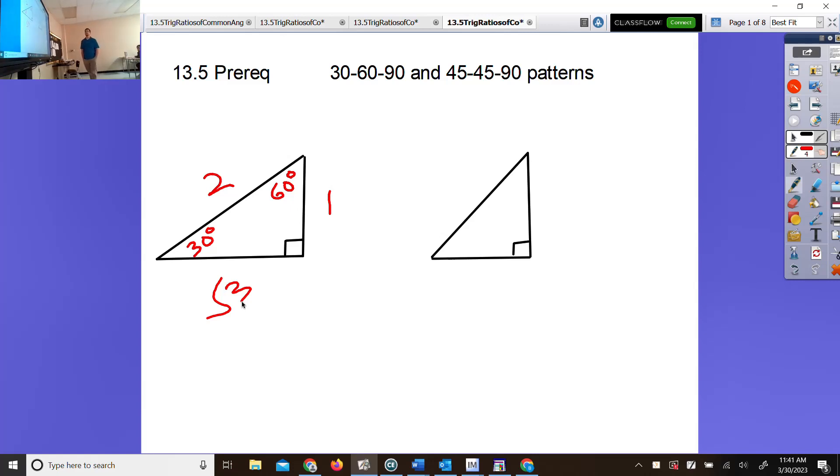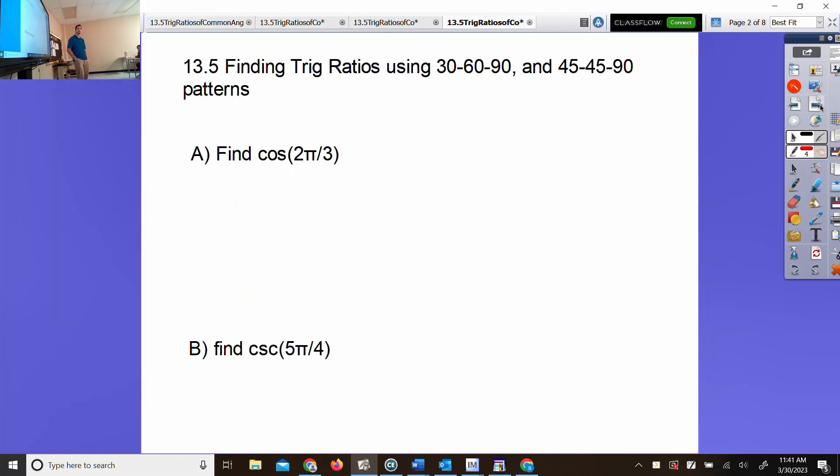What were the numbers on the 45-45-90 pattern? One, one, root two. Legs are the same. Hypotenuse is root two. Those are the numbers we used today. Not actually too bad a lesson. There's only one maybe tricky question in here.